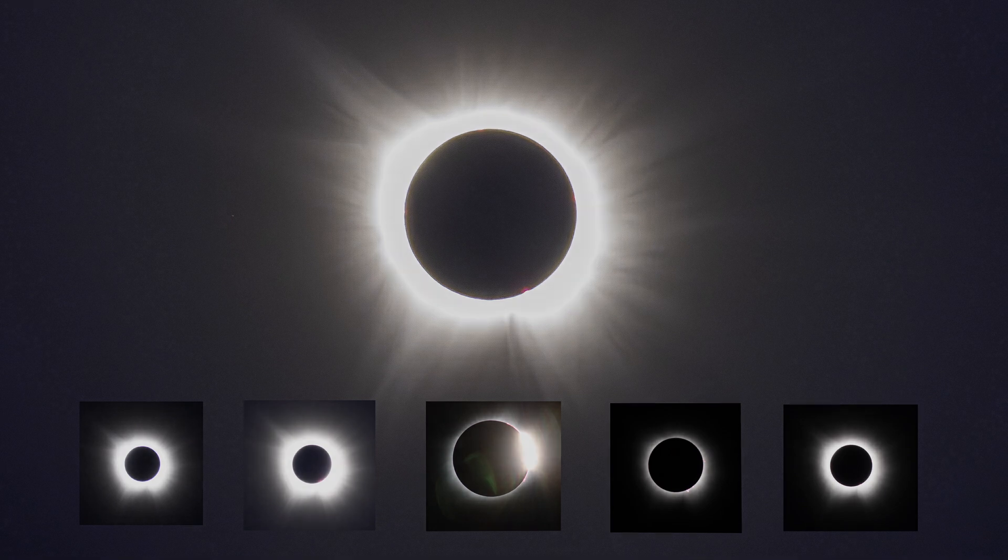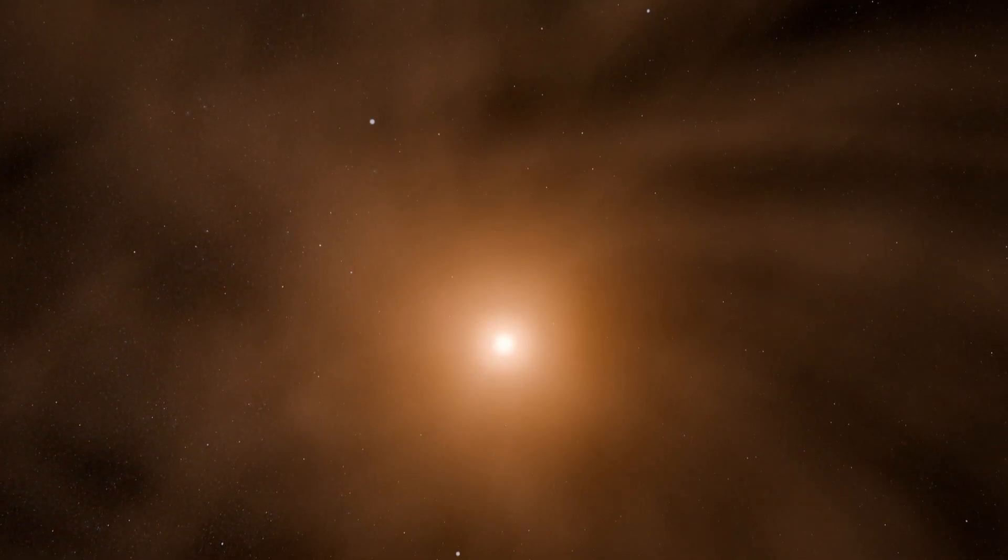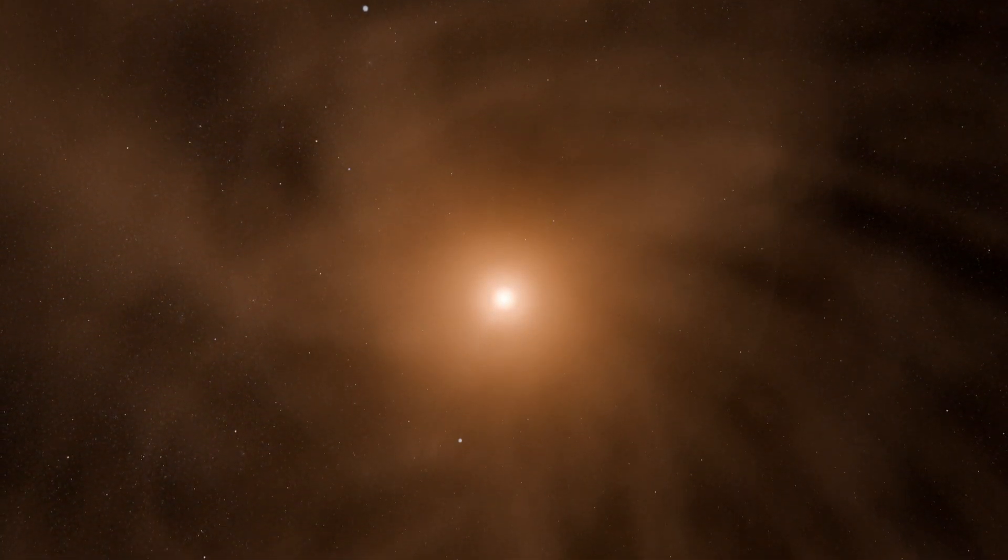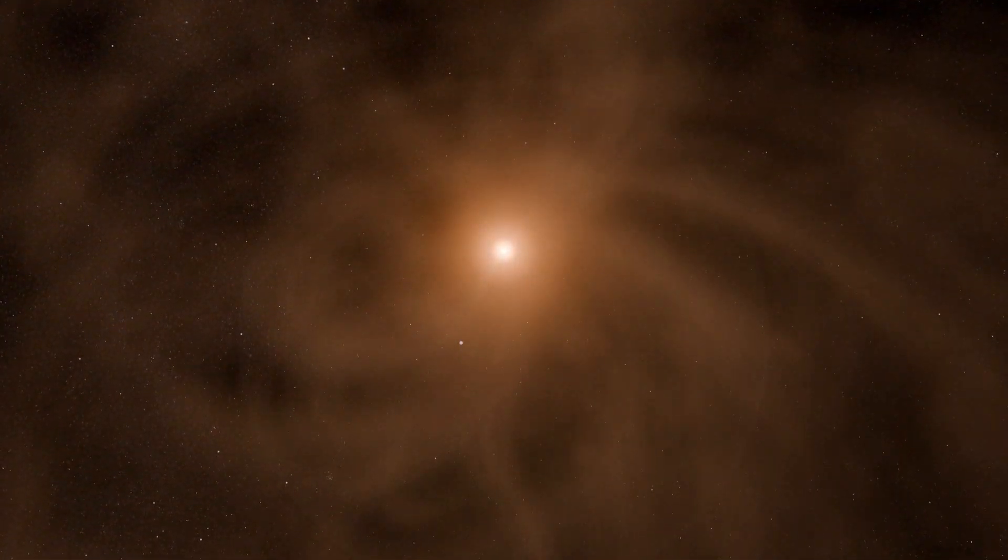The sun emits more than this visible light. Charged particles are always racing out in all directions from the sun's corona. This outflow of particles that immerses everything in the solar system is called the solar wind.